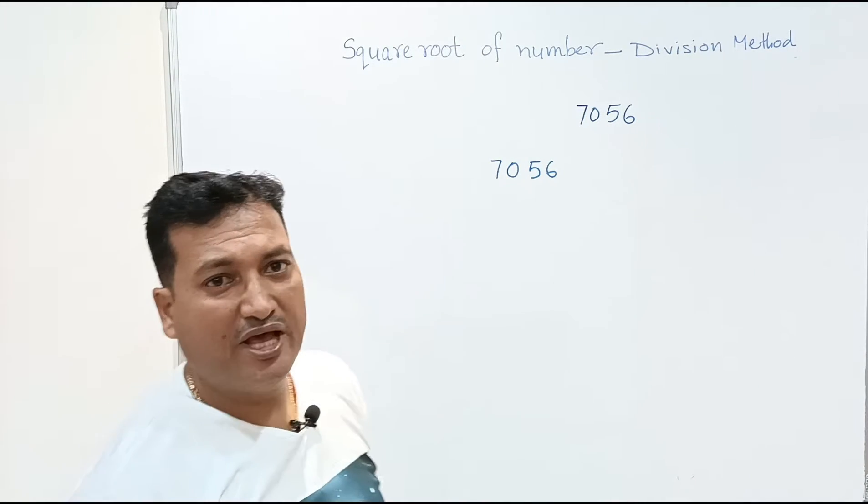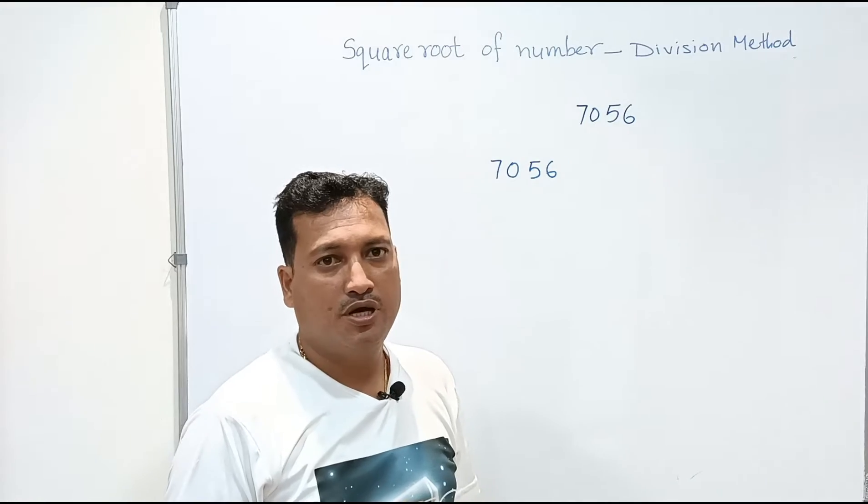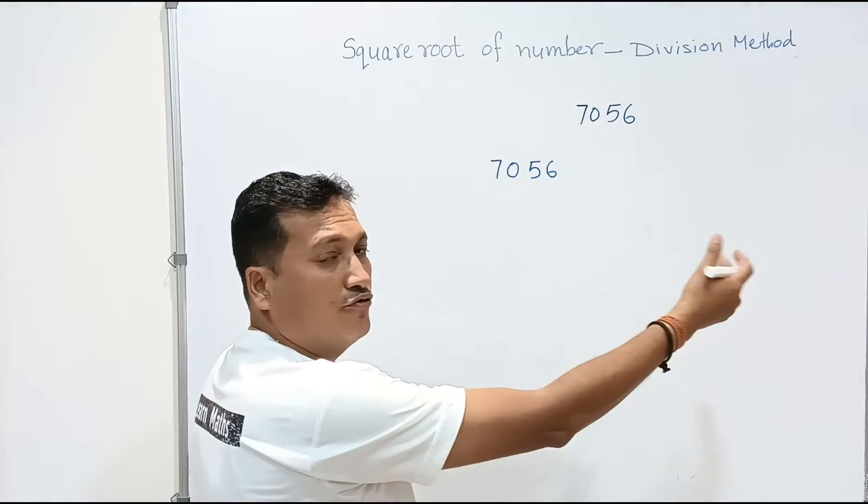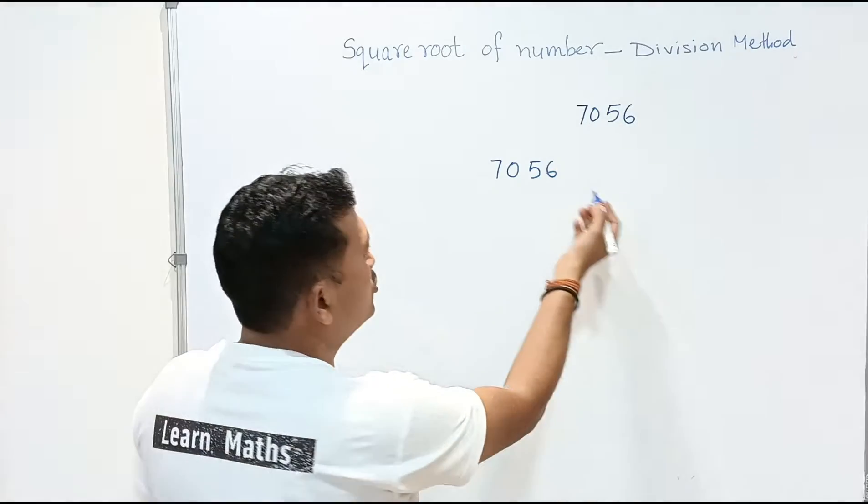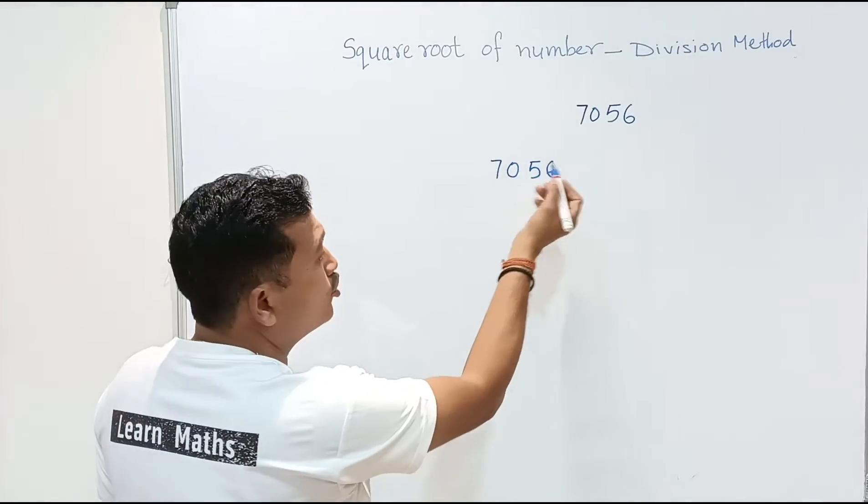Now we have to make a pair of two numbers and pairing should be done from right side, from one's place, from unit place. So each group should have two numbers.